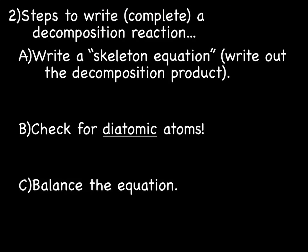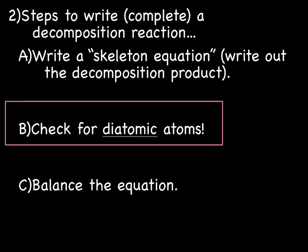Steps to write or complete a decomposition reaction. First thing you want to do is write the skeleton equation. Write out the decomposition products. So just take your reactant and break it apart. Easy enough. Then, really important, check for diatomic atoms. The guys that can never be alone. And you're going to run into those a lot with decomposition reactions. Then you just balance the equation. Pretty easy.